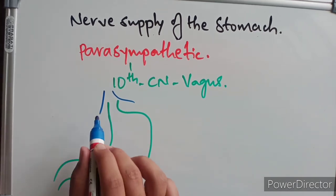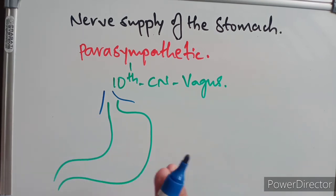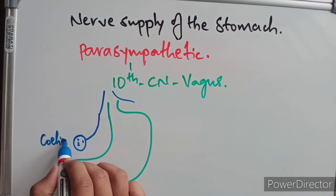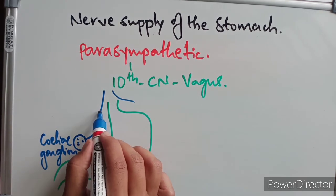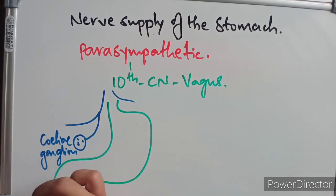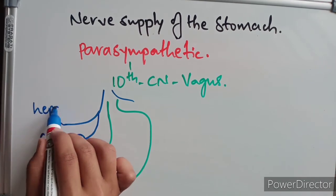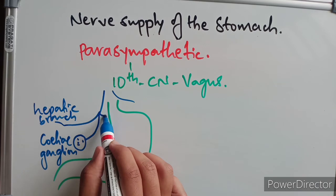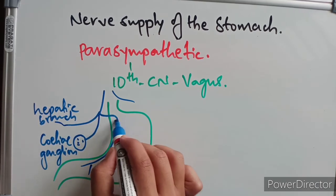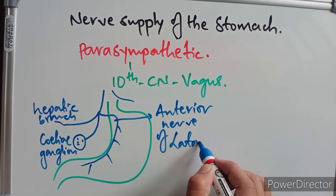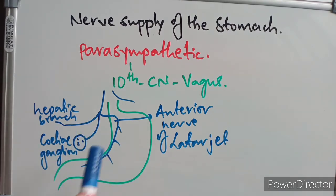The anterior vagal trunk, mainly from the left vagus nerve, divides into three main branches: the celiac branch going to the celiac ganglion, the hepatic branch going along the lesser omentum to the porta hepatis supplying the liver and gallbladder, and the anterior nerve of Latarjet, which is the largest branch forming the bulk of the anterior vagal trunk and supplies the anterior portion of the stomach.